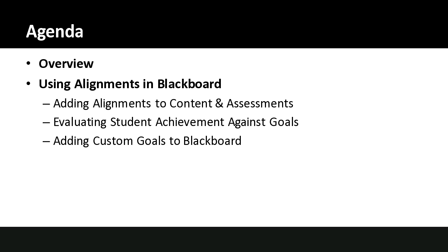Today I'm going to give an overview of what it looks like to track student learning outcomes and to gather evidence against those, particularly in Blackboard. We'll talk about how to add alignments to outcomes within Blackboard and then how to evaluate students against those. At the very end we'll spend some time talking about adding custom goals into Blackboard. That part of the process is the one that the fewest people will be engaged in, because once the goals are set up, everyone across the institution can use them. So we'll save that one for last and focus more on using these first.